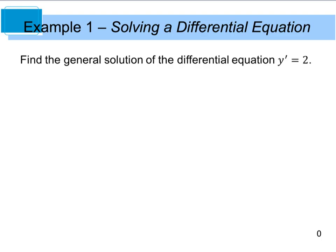For example 1, find the general solution of the differential equation y′ = 2. We're trying to find the function whose derivative is 2. So we need y = 2x, because 2x is really 2x¹ — bring the 1 down, multiply by 2, you get just 2 and the x goes away. Don't forget to add plus C for the generic form, giving y = 2x + C.